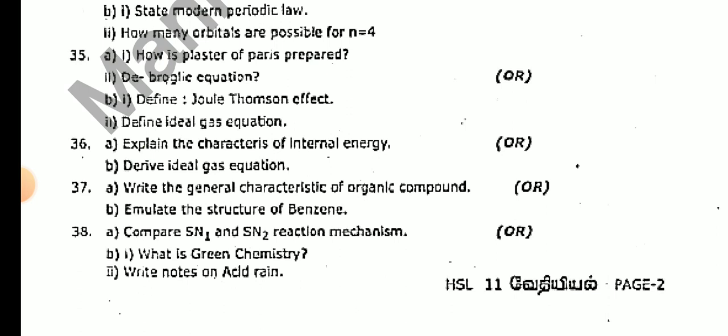Define ideal gas equation and explain the characters of internal energy. Derive the ideal gas equation. Write the general characters of organic compounds. Enumerate the structures of benzene. Compare SN1 and SN2 reaction mechanisms. What is green chemistry? Write a note on acid rain. So this is the 11th standard chemistry.